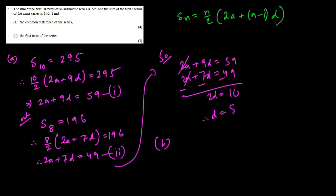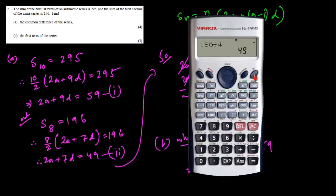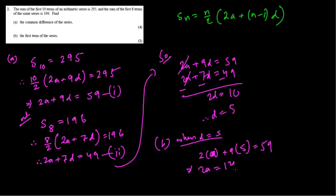Question b: we have to find the value of the first term. Using the first equation with d = 5: 2a + 9(5) = 59, so 2a + 45 = 59, therefore 2a = 14, so a = 7. This is the first term.